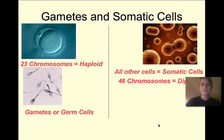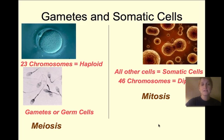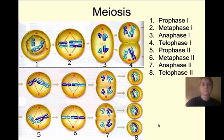Somatic cells are produced with mitosis — when the organism needs to grow or repair, cells go through mitosis. But gametes go through a process called meiosis in order to form. Meiosis actually has eight different stages that are very similar to mitosis, but with a few differences we're going to talk about.